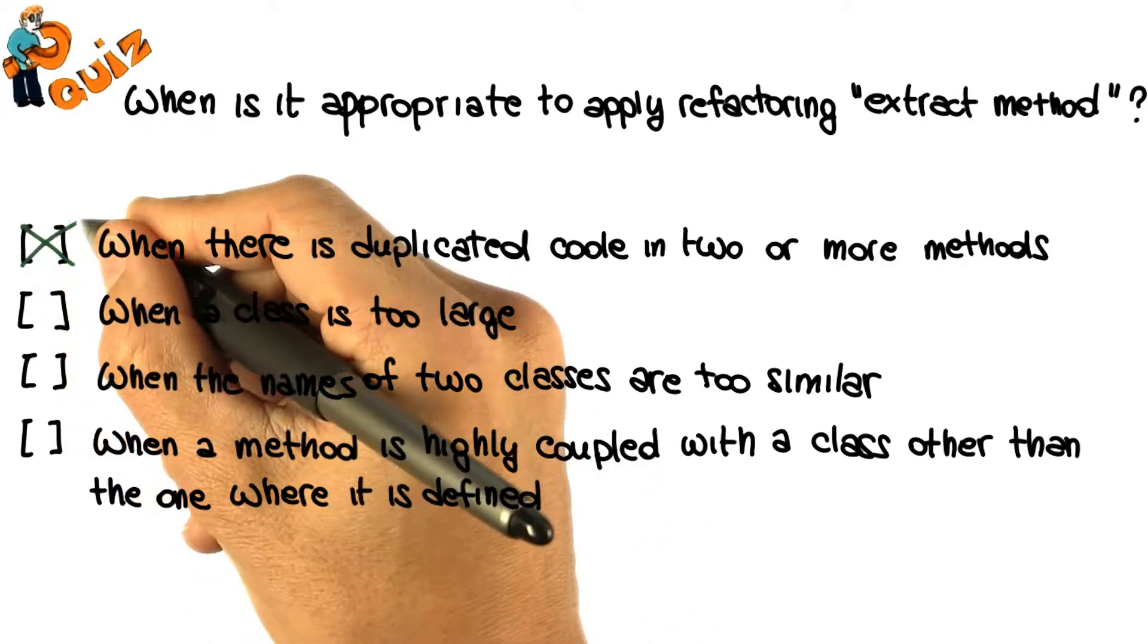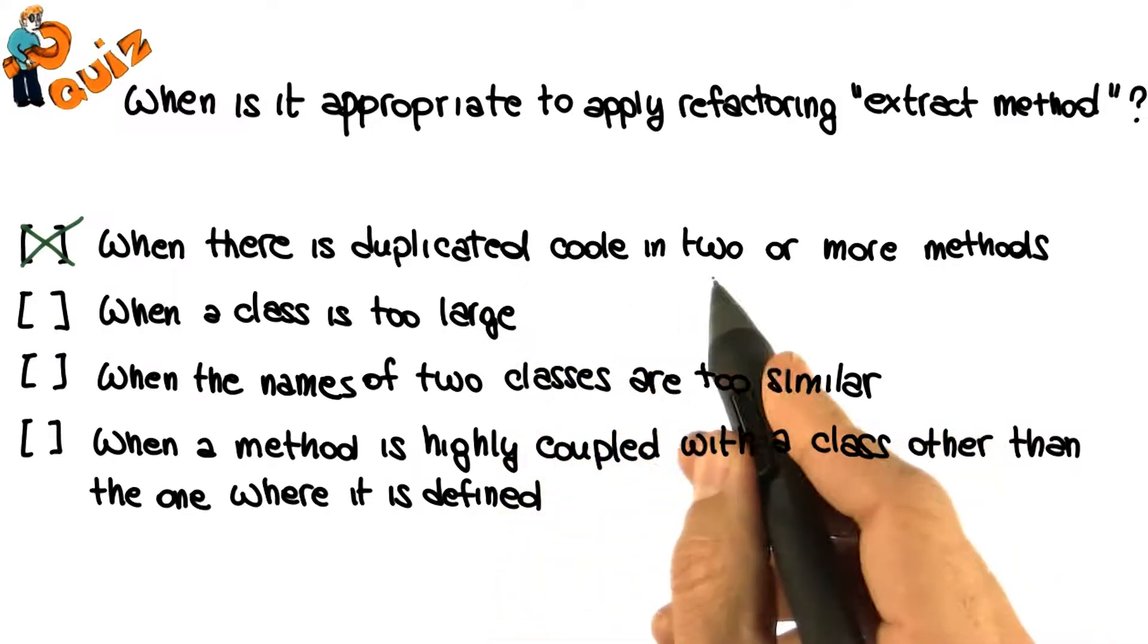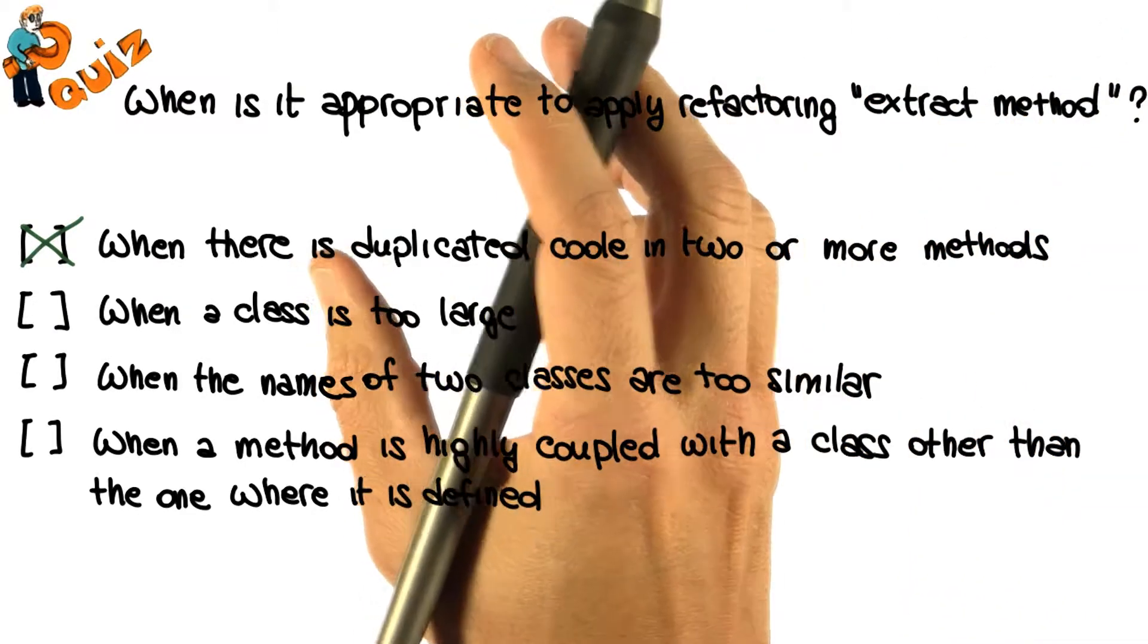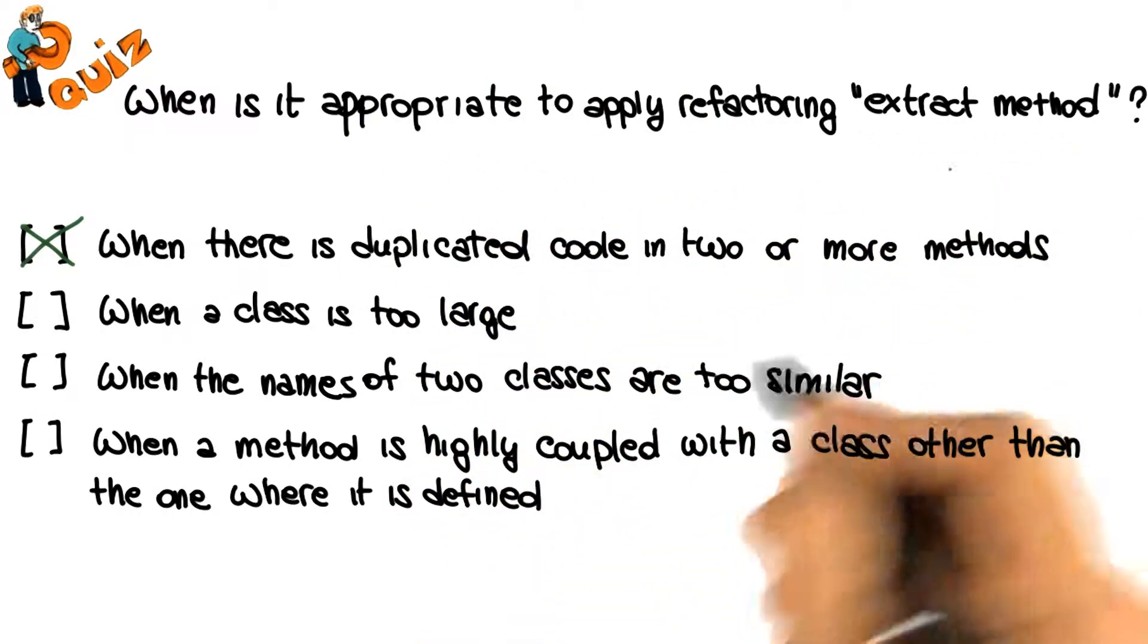The first scenario is the typical case in which it is recommended to use the extract method refactoring. When there is duplicated code in two or more methods and we want to take this code, factor it out, and basically have the two methods call a third method, which is the one that we create using the refactoring.